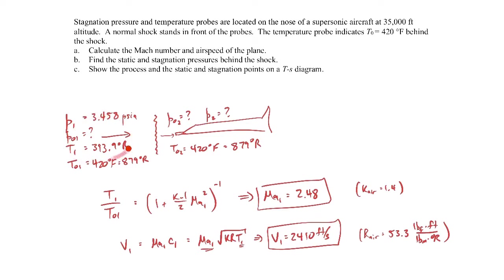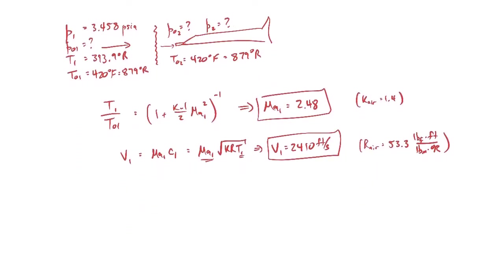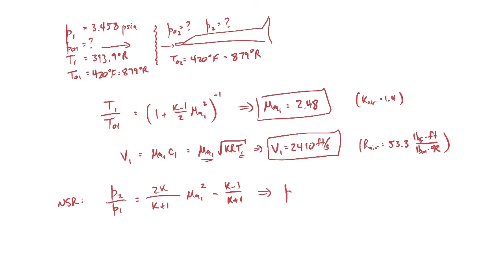Remember, the flow upstream is isentropic and the flow downstream is isentropic, but across the shock wave it's non-isentropic. So we use the normal shock relations to find the conditions across the shock. The normal shock relation for static pressure change looks like: P2/P1 = (2K/(K+1)) × M1² − (K−1)/(K+1). Using the known P1 and M1, P2 comes out to be 24.2 psia. That's the static pressure downstream.